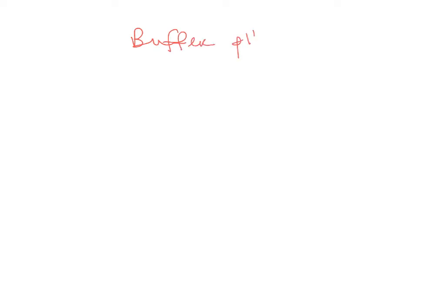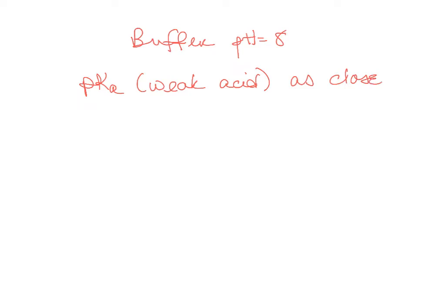We're switching gears to buffers. One conceptual question asks: which of the following solutions would be best for making a buffer controlled at a pH of 8? The rule of thumb is that you want the pKa of the weak acid making up your buffer to be as close to the target pH as possible.